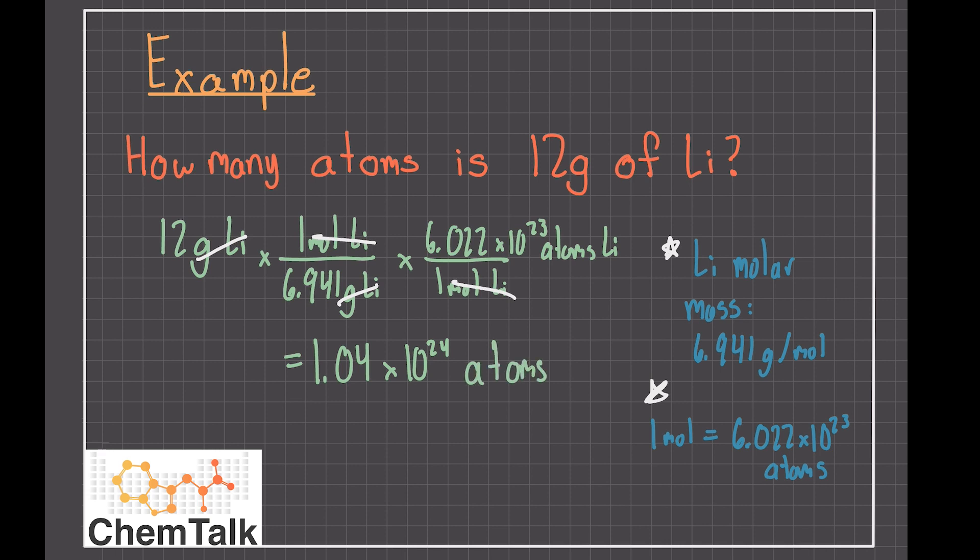We cross out our units, then we multiply across and divide. Our final answer is 1.04 times 10 to the 24th atoms in every 12 grams of lithium.